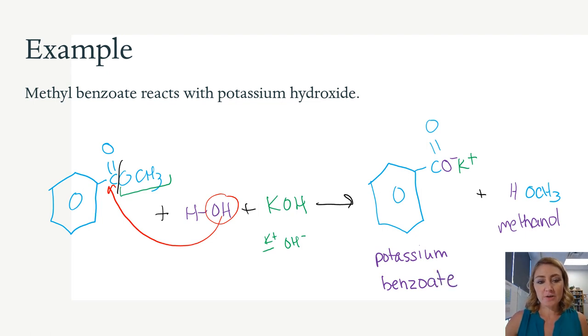Again, I know that we have a lot of colors going on here. We're not seeing the intermediate reactions. Just know that your ester bond is broken, and you're going to form a carboxylate salt, which requires a negative charge on your oxygen, a positive charge on your potassium, and you're going to reform the alcohol.